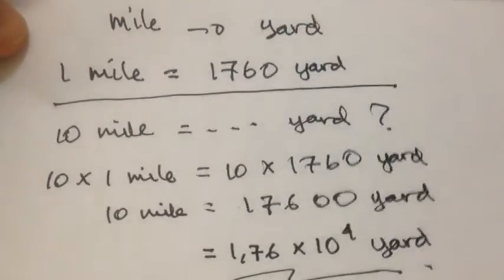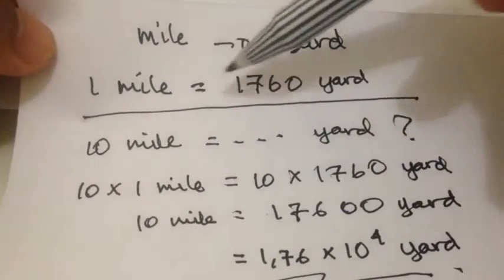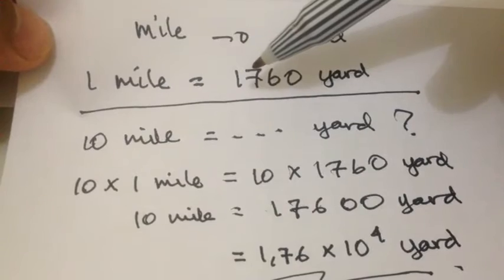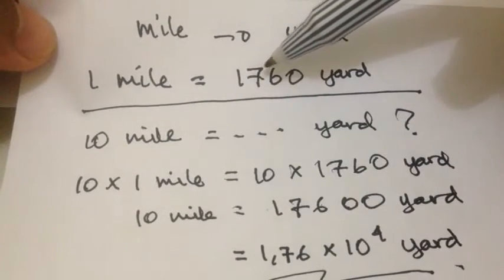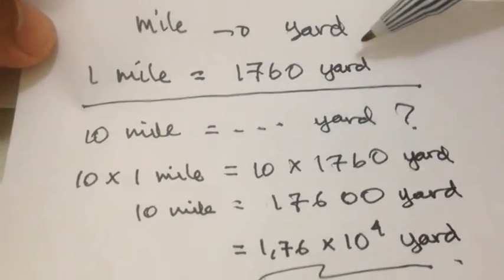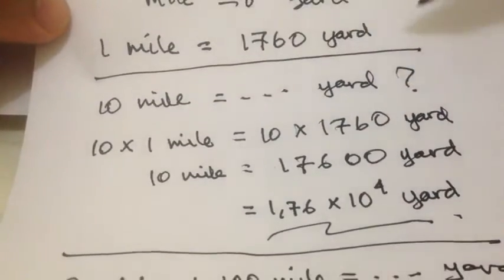The basic rule of this conversion is 1 mile is equal to 1,760 yards. That's the main formula.